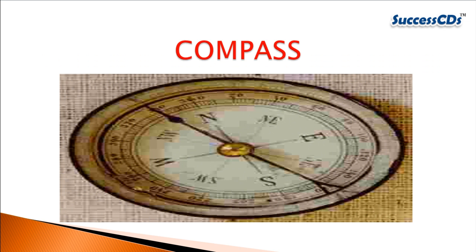Based on this property of a magnet, a simple device called the compass is designed. A magnetic needle is allowed to rotate freely inside a small circular box made of brass or aluminum. Since the needle is a magnet, it comes to rest only in the north-south direction, and the end pointing north is usually painted red.